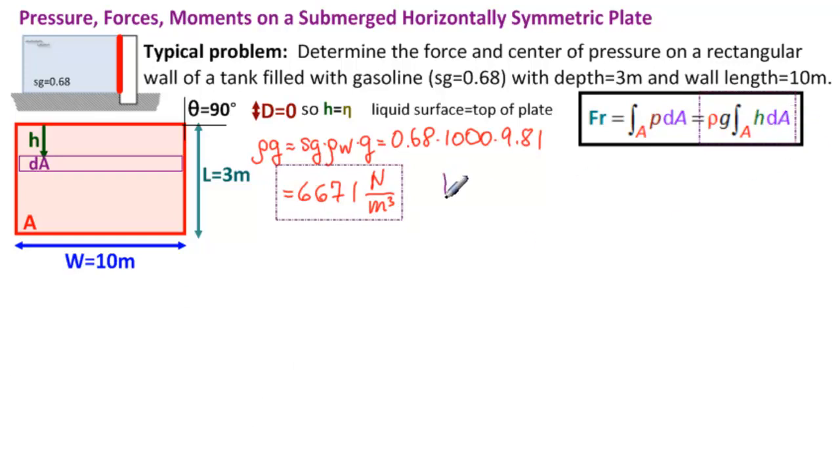Now, let's work out dA. dA. Remember, our variable of choice here was H, because the liquid surface is the top of the plate. So that means we have dH for the height. And our width everywhere is just W. So that's that. We'll substitute 10 in later. And W does not depend on H. Then we have our integral. What's left inside of our integral? We have an H from here and a dH from here. And now we do our limits of integration. H goes from 0 at the top to L at the bottom. So from 0 to L.